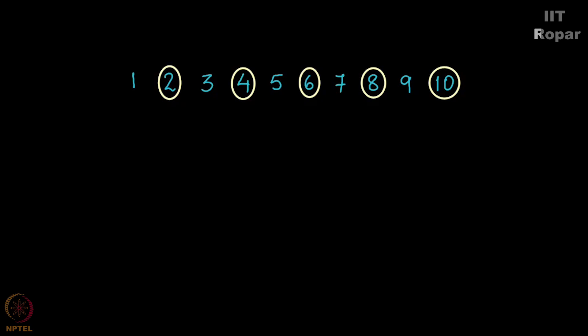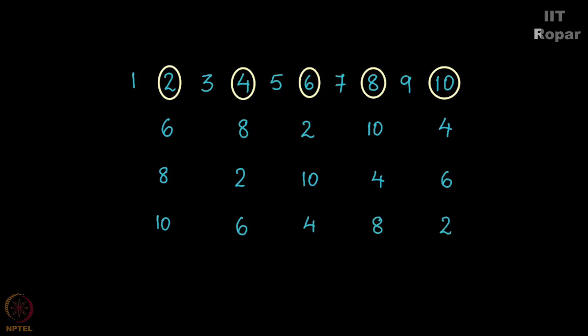I can arrange these numbers something like this: 6 can come here, 8 can come here, 2, 10, and 4. Or 8, 2, 10, 4, and 6 — this can be another possible arrangement. Or 10, 6, 4, 8, 2 — this is another possible arrangement. So you see in how many ways can the integers 1 to 10 be arranged such that no even integer is in its original position? I have shown you a few positions of the even integers.